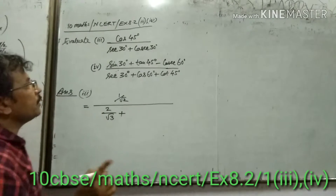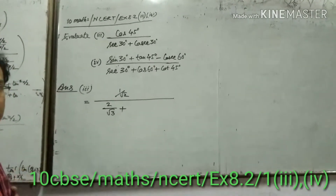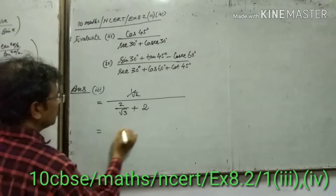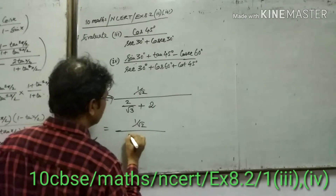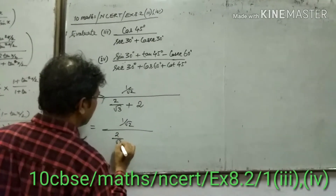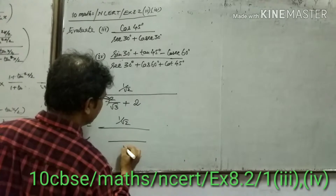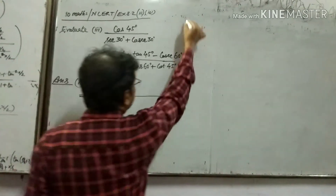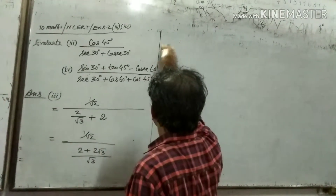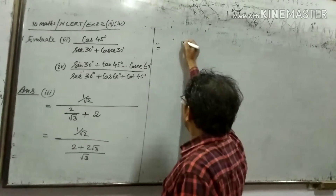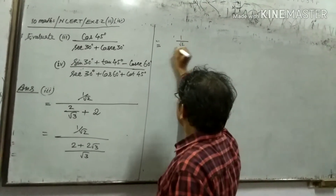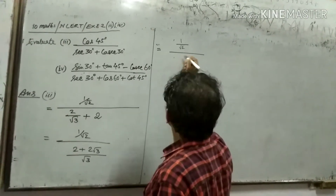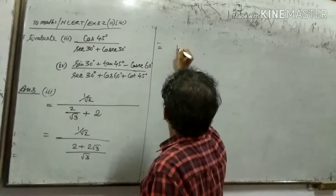Cosec 30 degree — 1 by 2. Cosec 30 degree, how to do it: 1 by root 2. 2 upon root 3. Root 3 is similar. 2 plus 2 root 3, equals to 1 by root 2.